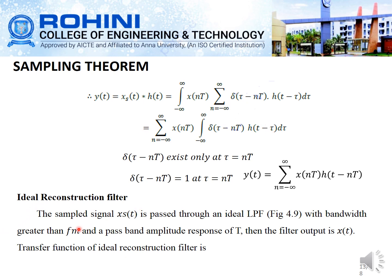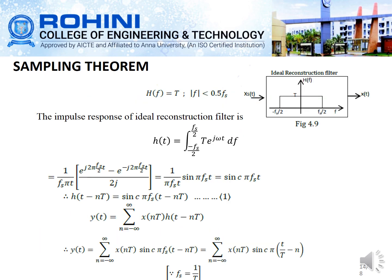The ideal reconstruction filter passes the sampled signal through an ideal low-pass filter with bandwidth greater than fm and a passband amplitude response of T. The filter output is x(t), and the transfer function of the ideal reconstruction filter is H(f) equal to T for |f| less than 0.5·fs. The impulse response h(t) of the ideal reconstruction filter is given by the standard equation, and substituting into y(t) gives y(t) equal to the summation of x(nT)·sinc(t/T − n).